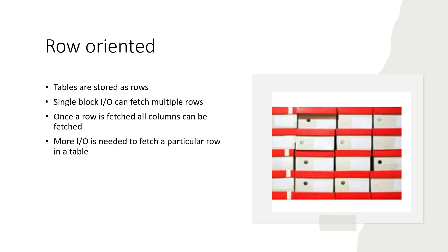More IOs are needed when you want to fetch a particular row in a table. If you are looking for a particular row, a single block IO may or may not return that row, so you have to scan the whole table — meaning multiple block IOs to get to the row you are interested in. Sometimes you may get it in the first IO call, sometimes it may take multiple calls. Essentially, row-oriented means the data is stored exactly as you see it in the table — the entire row with all columns together in a contiguous block.